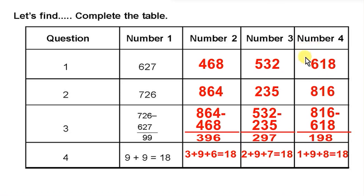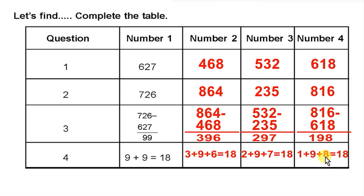Another example: 618. Reverse the digits to get 816. Subtract: 816 minus 618 gives 198. Add the digits: 1 plus 9 plus 8. 1 plus 9 is 10, and 10 plus 8 is 18.